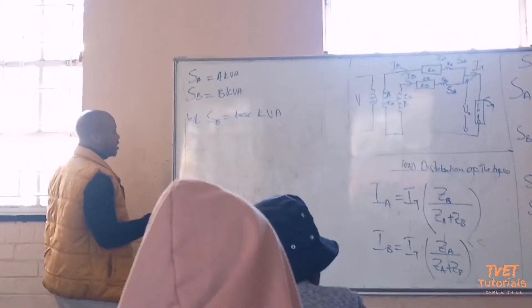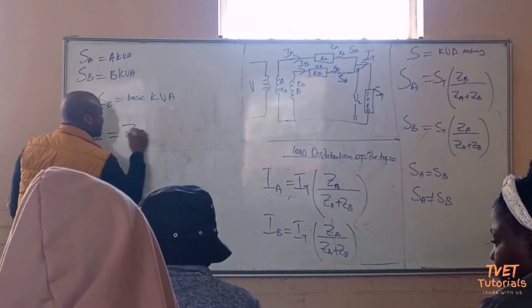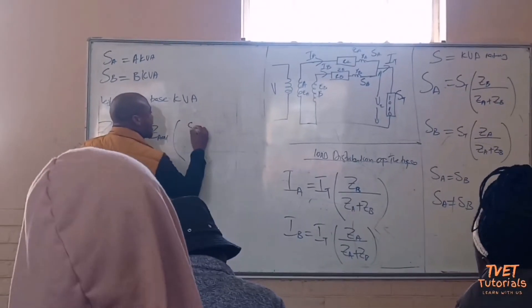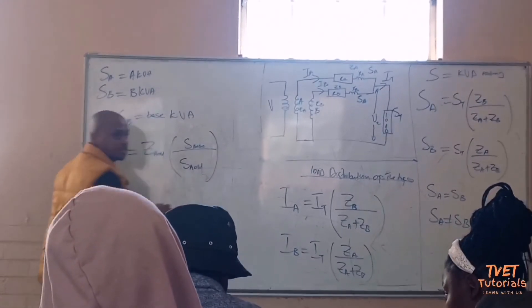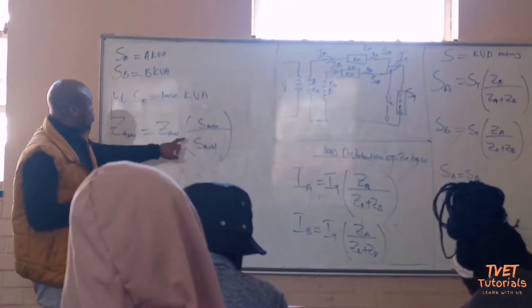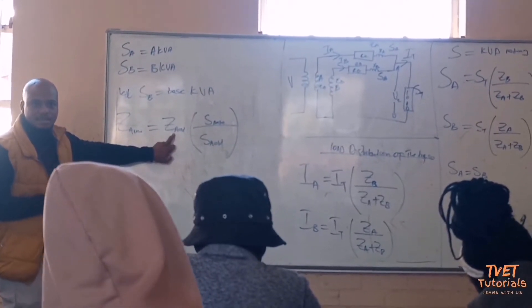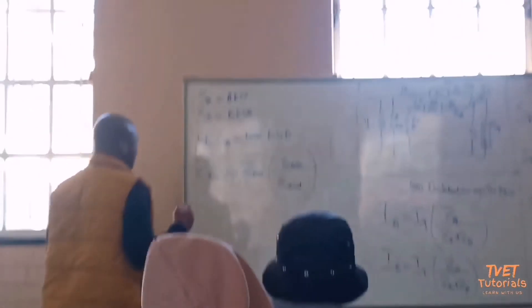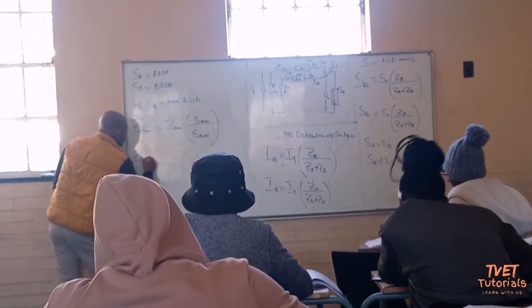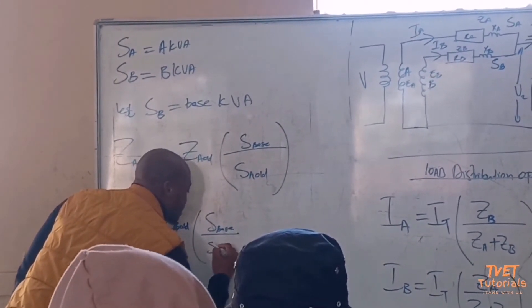How do you get a new value of ZA? ZA new equals ZA old multiplied by S_base divided by SA old. You take the old SA, use it to divide the S_base which is the one you have chosen, and multiply by old ZA. Similarly, ZB new equals ZB old multiplied by S_base divided by SB old.